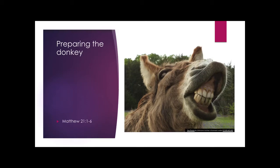Think about the donkey — it's not the most spectacular animal. It's not a huge horse with beauty. And so it's an unusual animal for Jesus to choose to come into the city on. But also notice that there was a prophecy saying that he would do that, and that is a key important part of what is happening here.